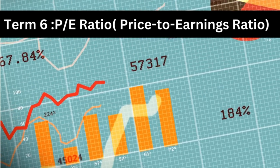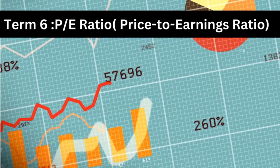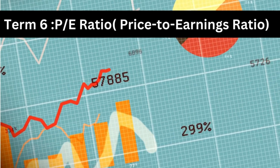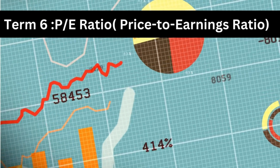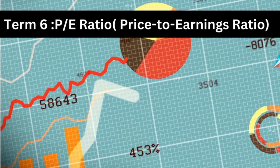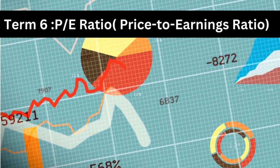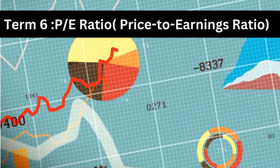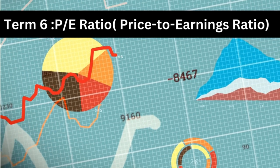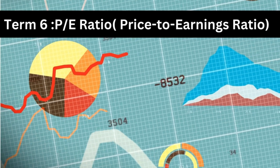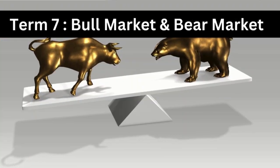Term six: P/E Ratio, also known as the Price-to-Earnings Ratio. The P/E ratio measures a company's current share price relative to its per-share earnings. It's a key indicator of a company's valuation.